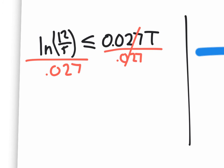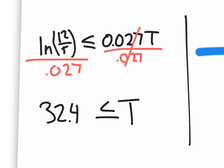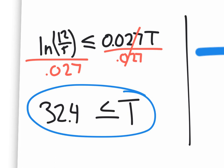If you do that correctly, t is greater than or equal to roughly 32.4 years. It would take about 32 and a half years for the five thousand dollars to grow to twelve thousand dollars. The exact calculator result is 32.42476805, but rounded off it's approximately 32 and a half years.